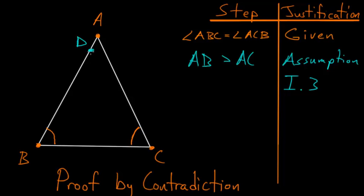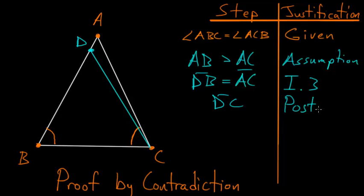Let's say that this point here, D, is the point where we have to cut AB off such that DB is now equal to AC. With this, we can connect D to C using Postulate number 1, which says that we can connect any two points with a straight line.